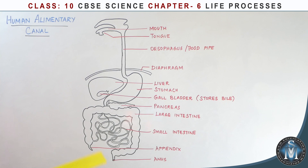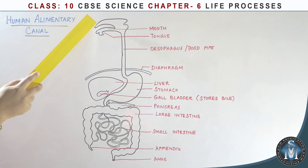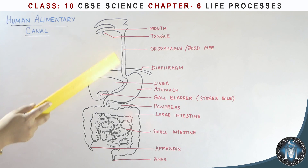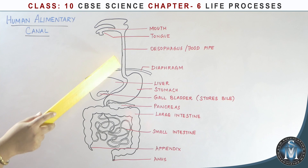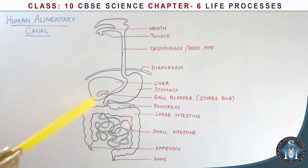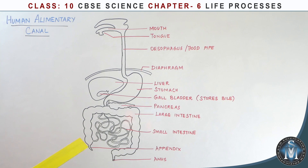Let's look at a diagram of the human alimentary canal. Starting with the mouth, where we chew the food, the salivary glands mix salivary amylase to convert starch to sugar. Then food travels down the food pipe by peristalsis. In the stomach, gastric glands secrete HCl, mucus, and pepsin — HCl creates an acidic medium for protein digestion, and mucus protects the stomach lining.